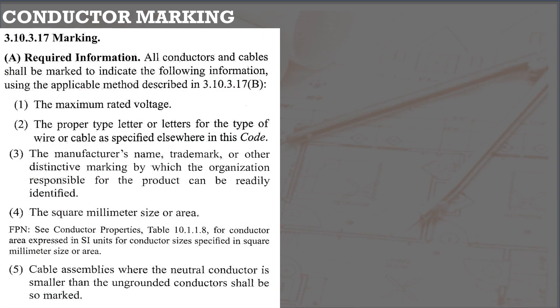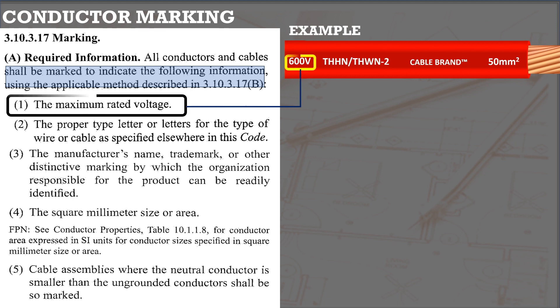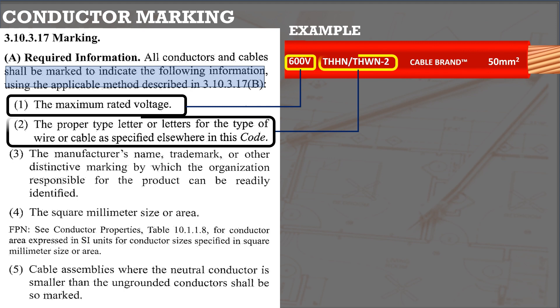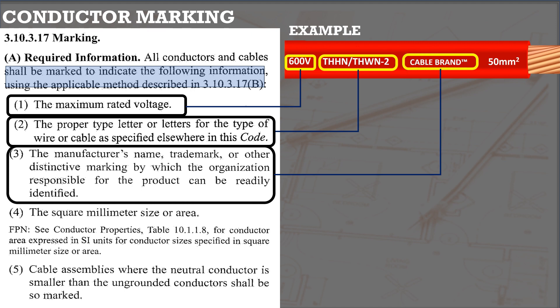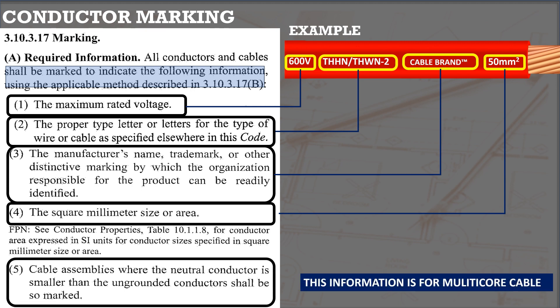All conductors installed in a building must be listed as specified in Section 3.10.3.17 marking. It notes that all conductors shall be marked by the manufacturer. The sample conductor shown is a single-core conductor. If listed, we can find the following information: maximum voltage, insulation type and temperature rating, manufacturer's name or trademark, conductor size or area — in the Philippines we use squared millimeters, while NEC uses American Wire Gauge — and for cable assemblies, applicable to multi-core conductors.